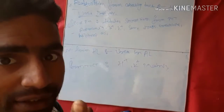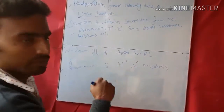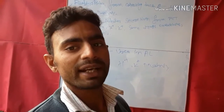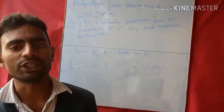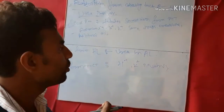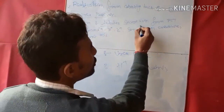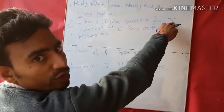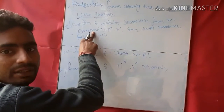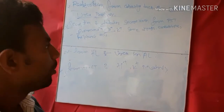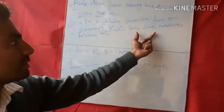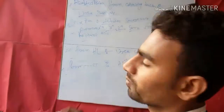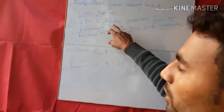The next topic is tubular secretion from the proximal convoluted tubule. The following substances are secreted from the proximal convoluted tubule: ammonia, hydrogen ions, potassium ions, some drugs, creatinine, and hippuric acid.